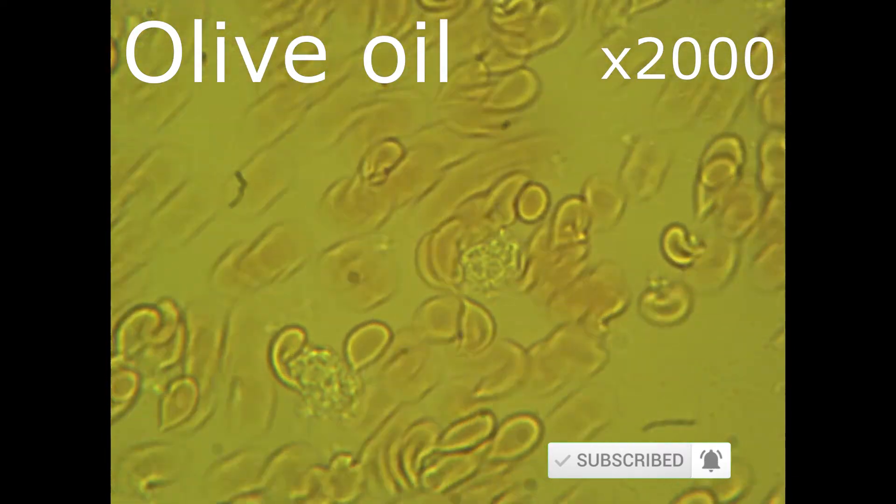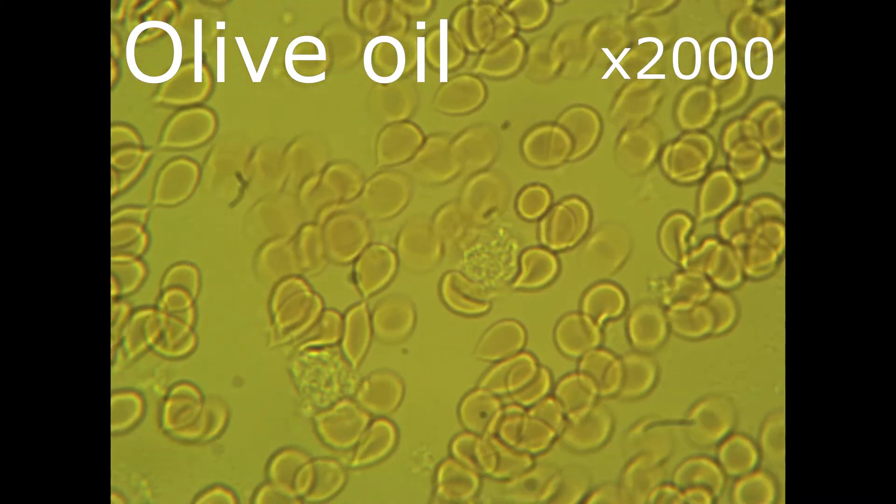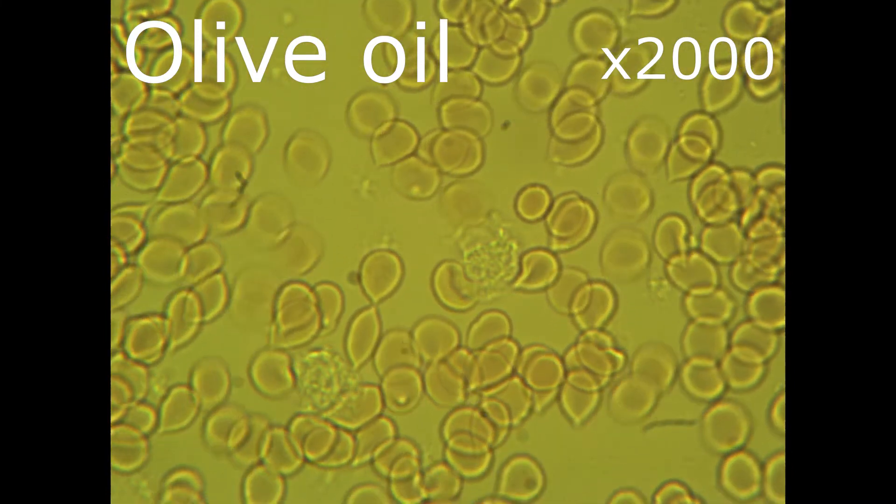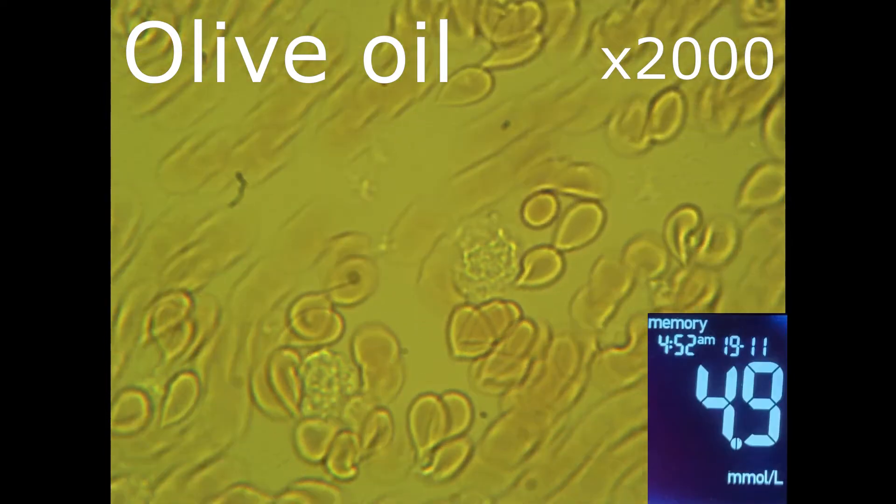Shall we move them around? The flow is average. Nothing to complain about. Sugar level is in a normal range. It is 4.9.